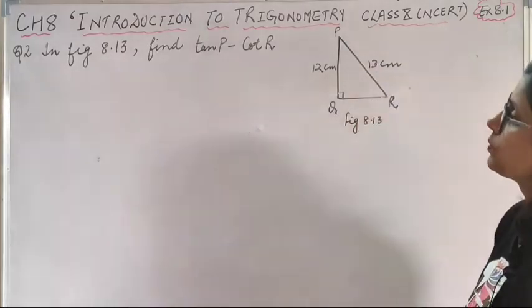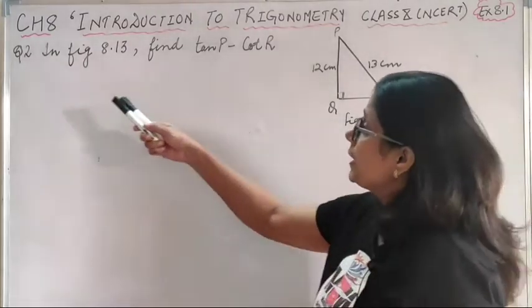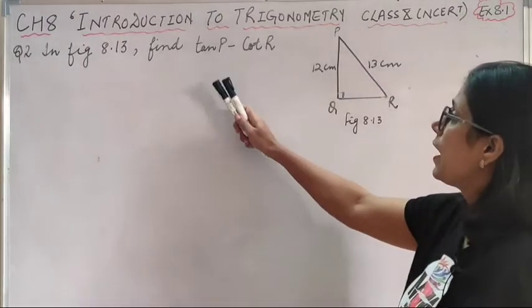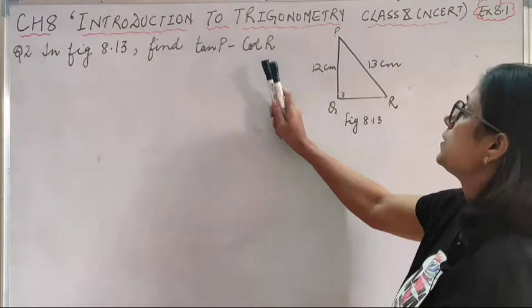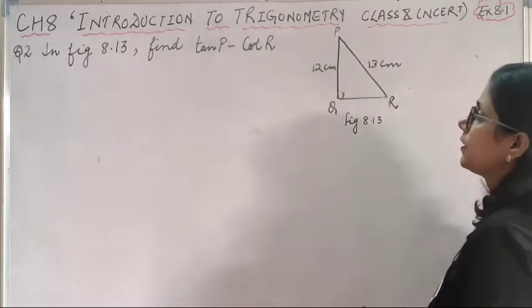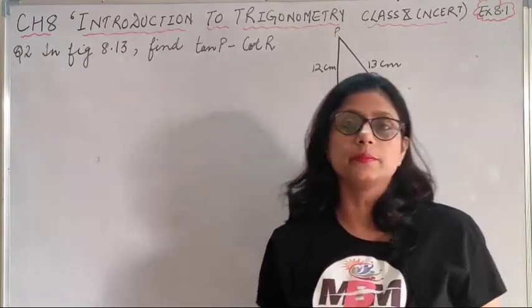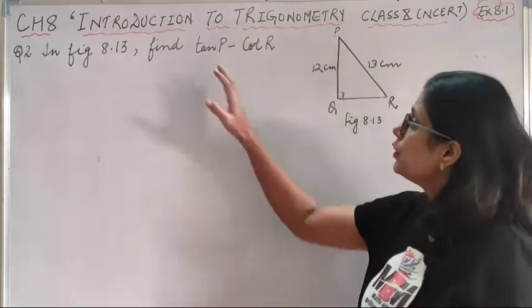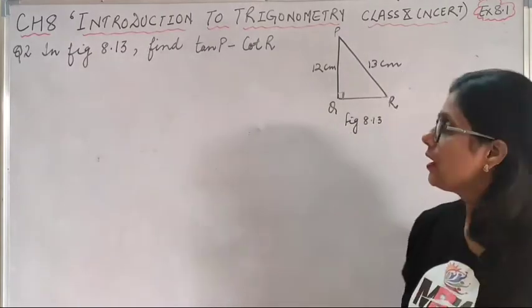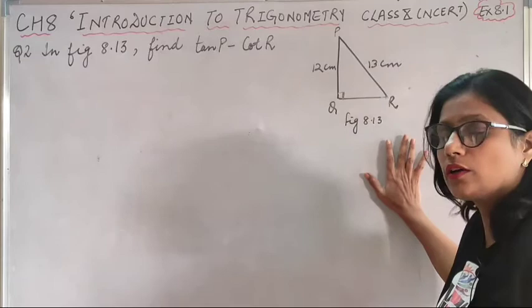Let's start with question number 2. The second one is very easy. In figure 8.13, find tan P minus cot R. We need to find the value of tan P minus cot R. So first you will find the value of tan P and cot R, and then you will just subtract the values.